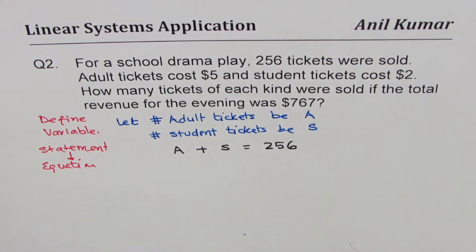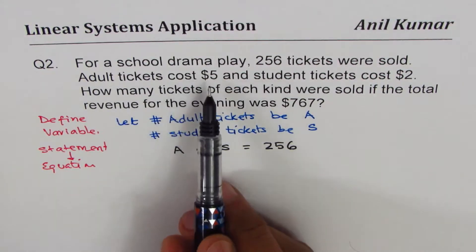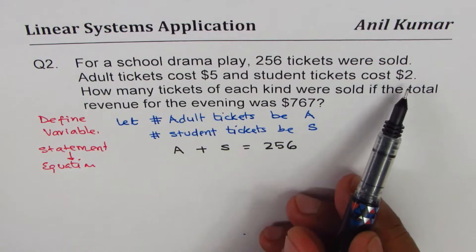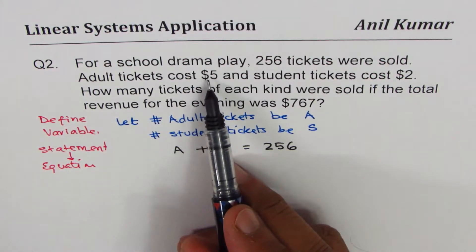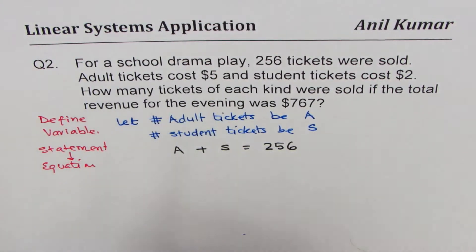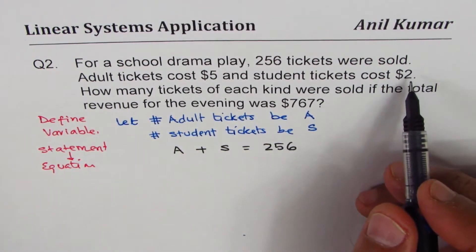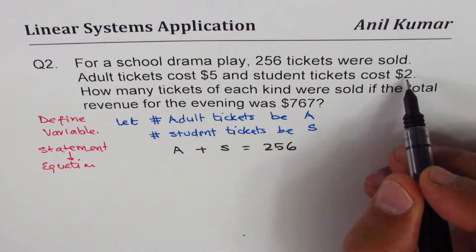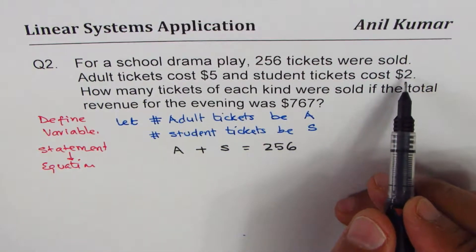Does it make sense? At times it may be tricky, but you have to correlate. Now the second statement is: adult tickets cost $5 and student tickets cost $2. So if you sell A tickets, the revenue will be 5 times A. If you sell 2 tickets, 5 times 2 gives you $10. If you sell 4 tickets, 4 times 5 gives $20 for adults. If you sell 10 tickets for students, you get 10 times 2, which is $20. So that's called revenue — you generate revenue by selling these tickets, and that equals the number of tickets sold times its value.